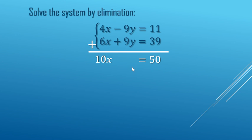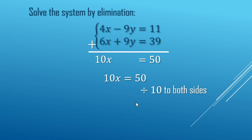You see here the y's were eliminated, leaving us with 10x equals 50. To solve for x, let's go ahead and divide by 10 on both sides. x equals 5. So we found the value for x.